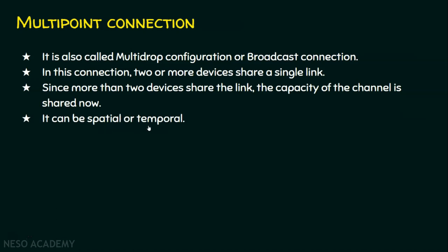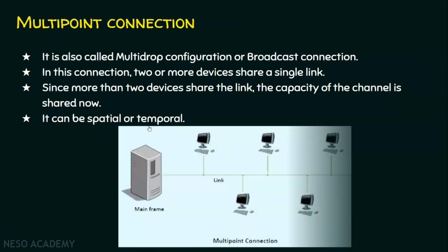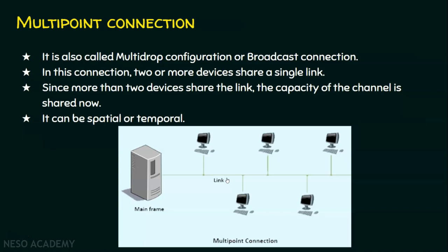In a spatial multipoint connection, the link is used by all devices simultaneously, which can cause a problem: if two devices send data at the same time, a collision can happen — meaning two data signals collide and become unusable. In a temporal multipoint connection, all devices have their own turn to send data, so collisions will not happen.